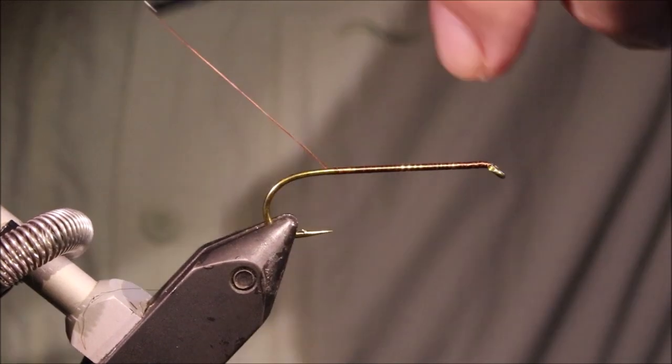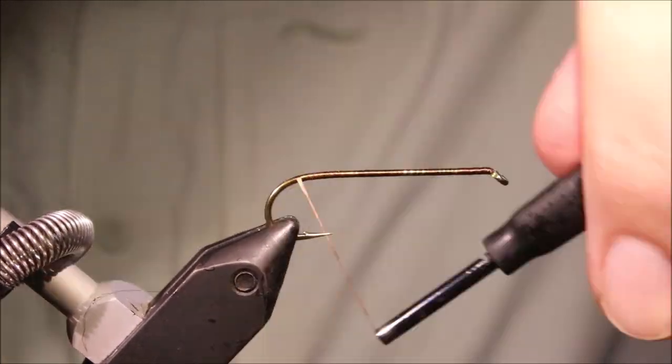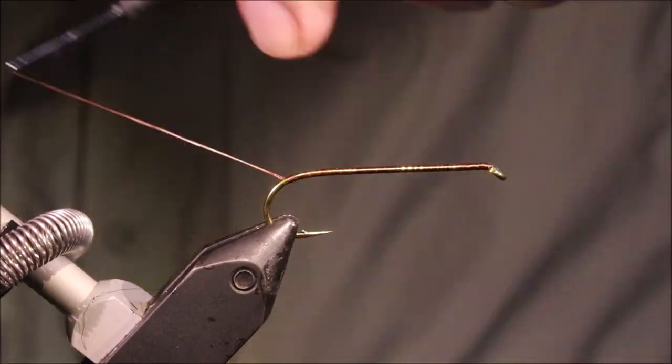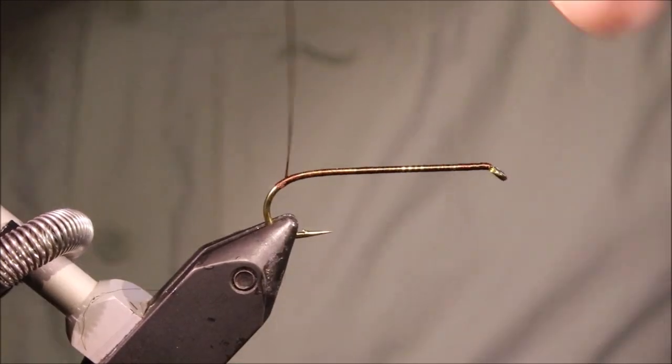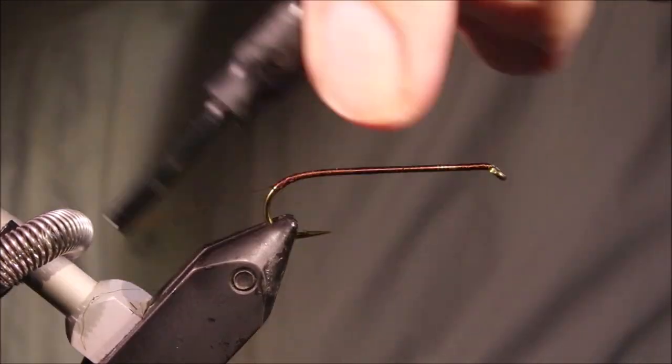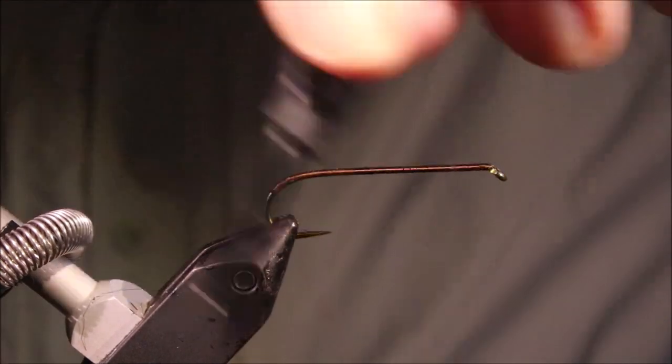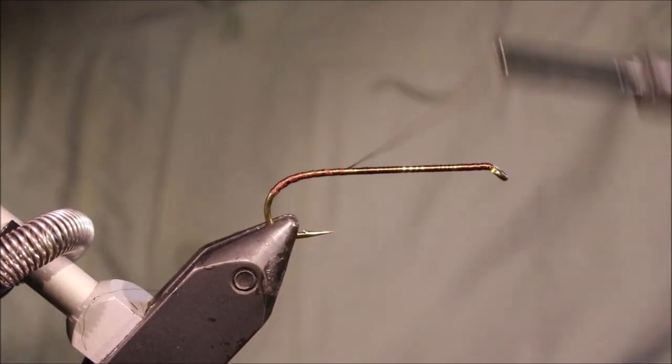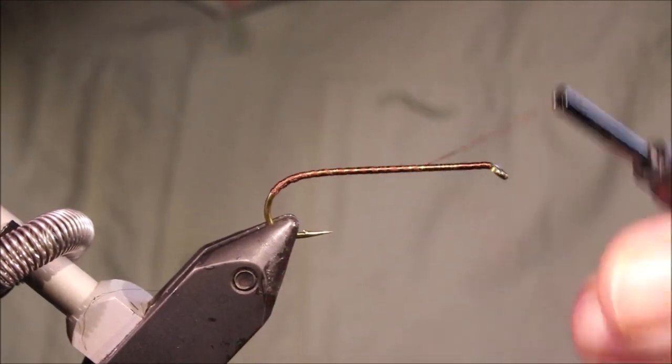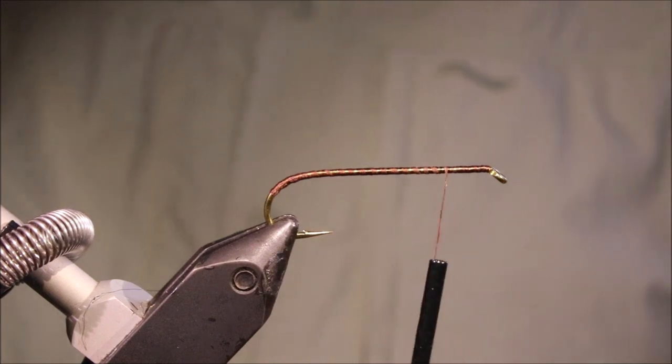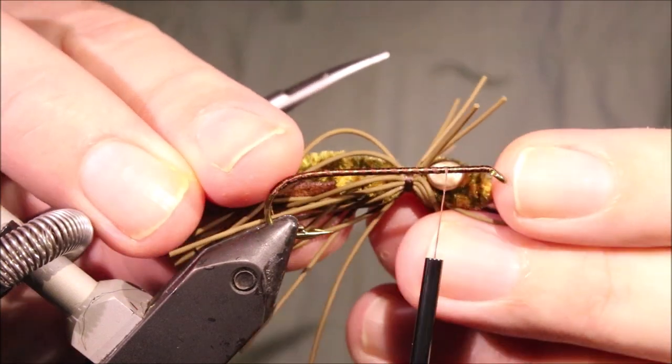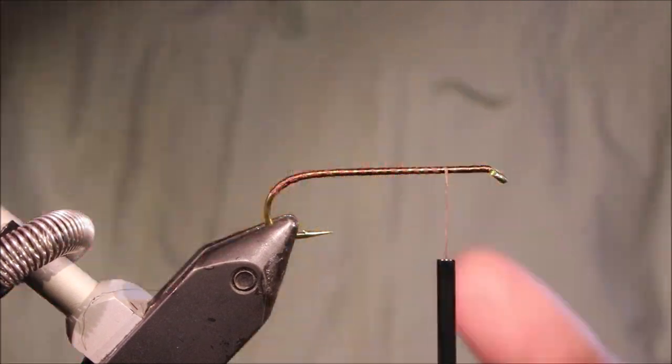So I've got my hook and my vise, this is a Temco 5263 and this is a size 4, but you can use a similarly proportioned hook, a long shank, heavy wire and I like to just check if I've got my eyes on the right bit.